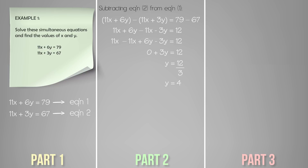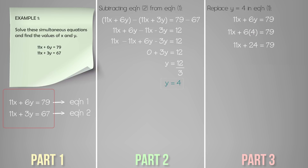This leaves us with 3y is equal to 12, therefore y is equal to 4. But we are not finished yet — we still have to solve for x. To solve for x we substitute y equals 4 into equation 1. We get 11x plus 6 times 4 equals 79, so 11x plus 24 equals 79. Subtracting 24 from both sides gives 11x equals 55, and dividing both sides by 11 gives x equals 5.